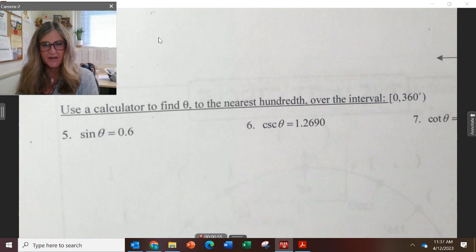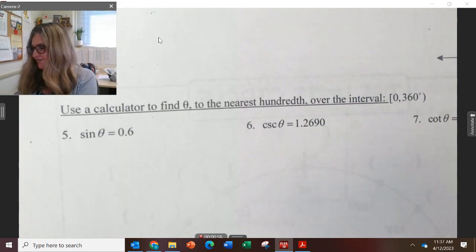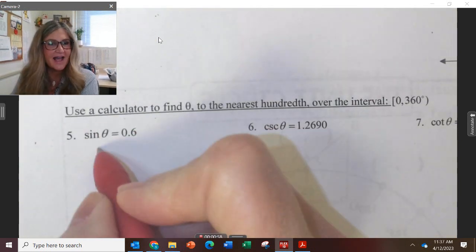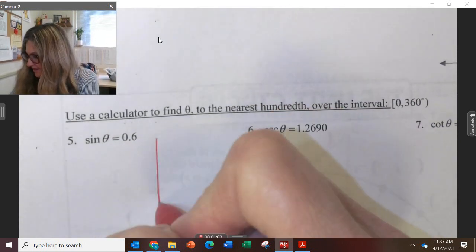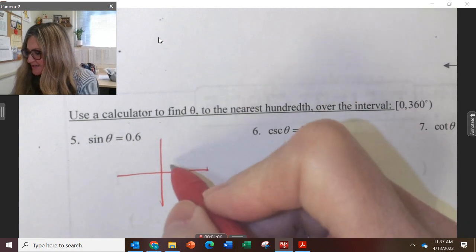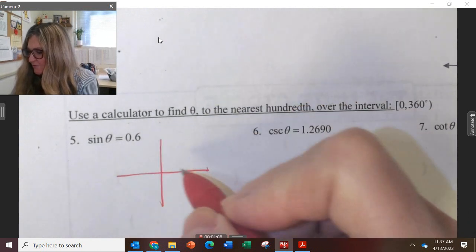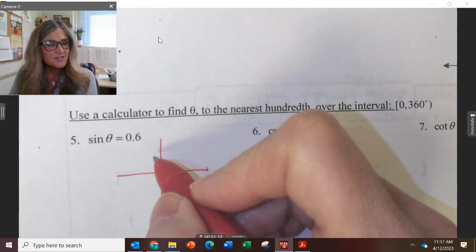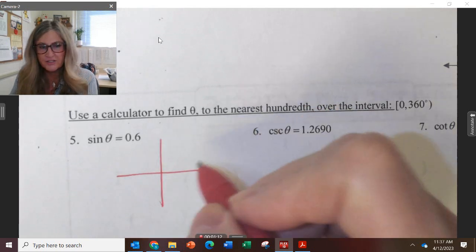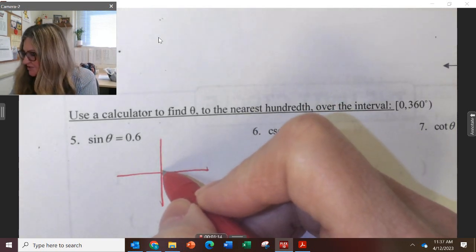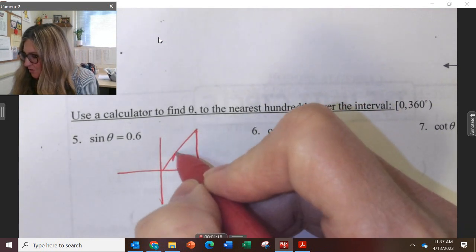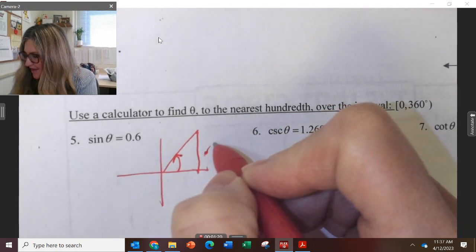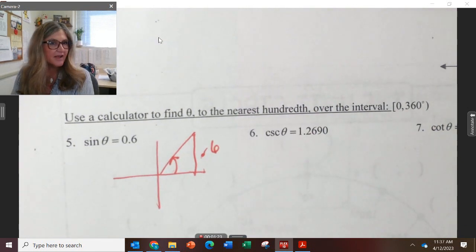Now here's what we're trying to do. We're trying to find what are the angles that have a sine value of 0.6. So 0.6 is going to be the ratio of y to r. Since we're thinking of the unit circle, r is 1. So really we're just thinking, where on this circle, what is this angle that makes this y value 0.6?